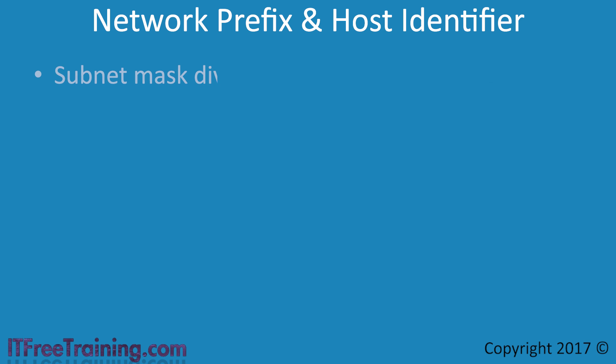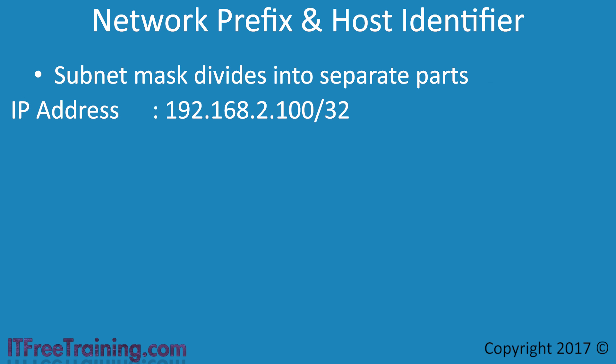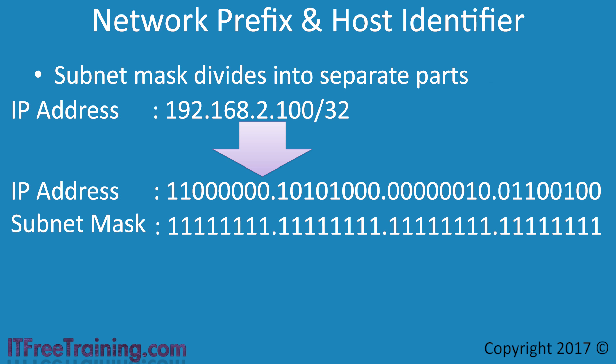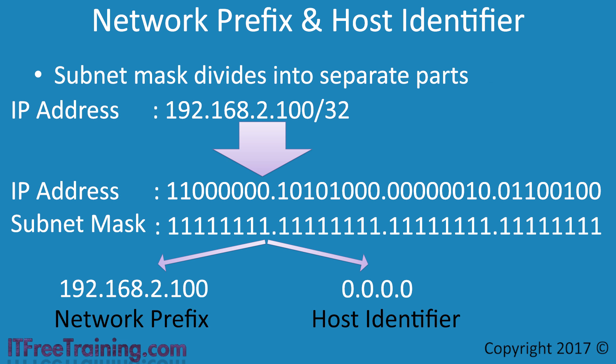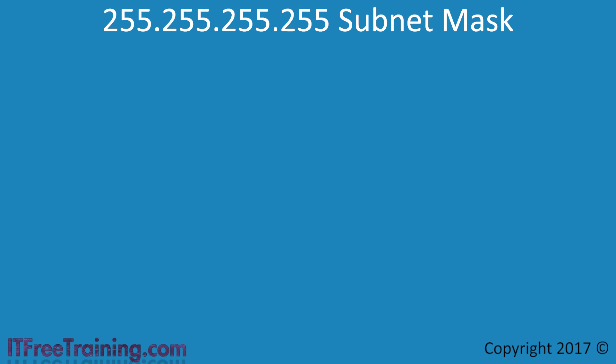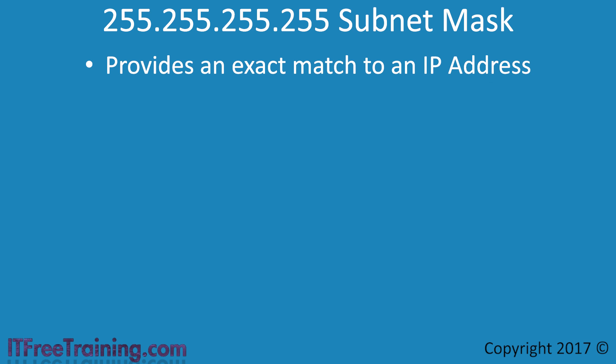The subnet mask divides an IP address into a network and host identifier. When you are given an IP address where all the subnet mask bits are set to 1, the IP address and the subnet mask are applied to find the network prefix and host identifier. The host identifier will be 0.0.0.0 because no bits have been assigned to the host part. When a subnet mask that is all 1's is used, the network prefix will always be the same as the original IP address. This subnet mask is used when an exact match to an IP address is required, and you will often see it used in routing tables.